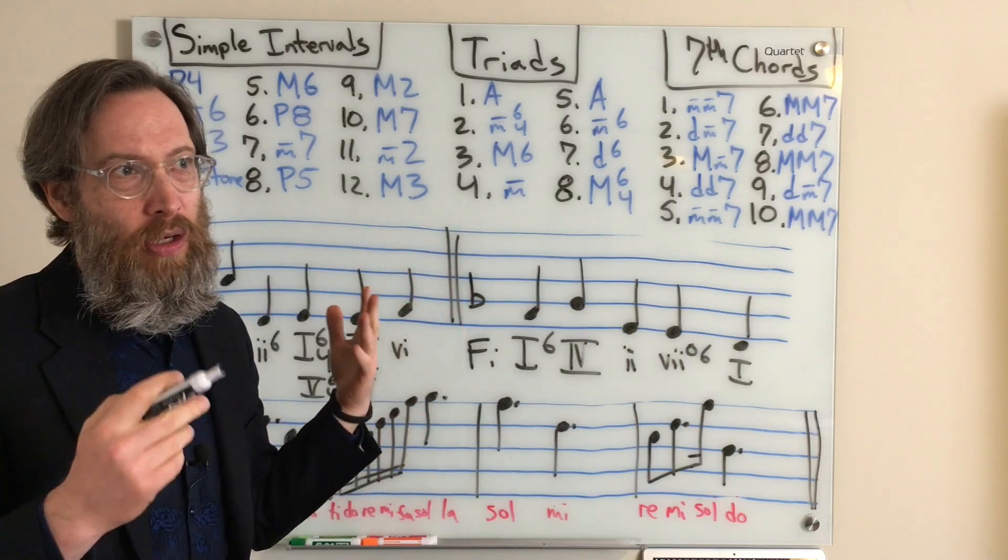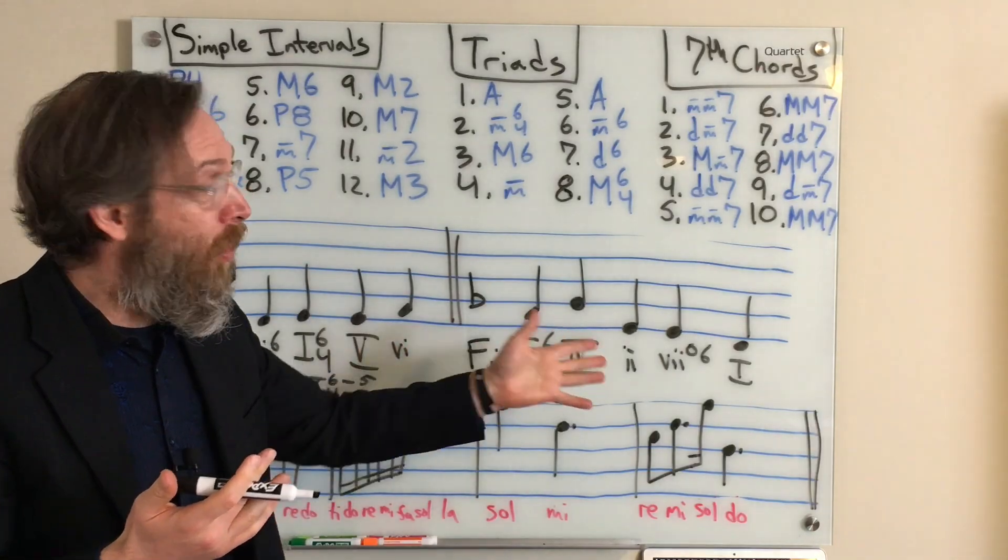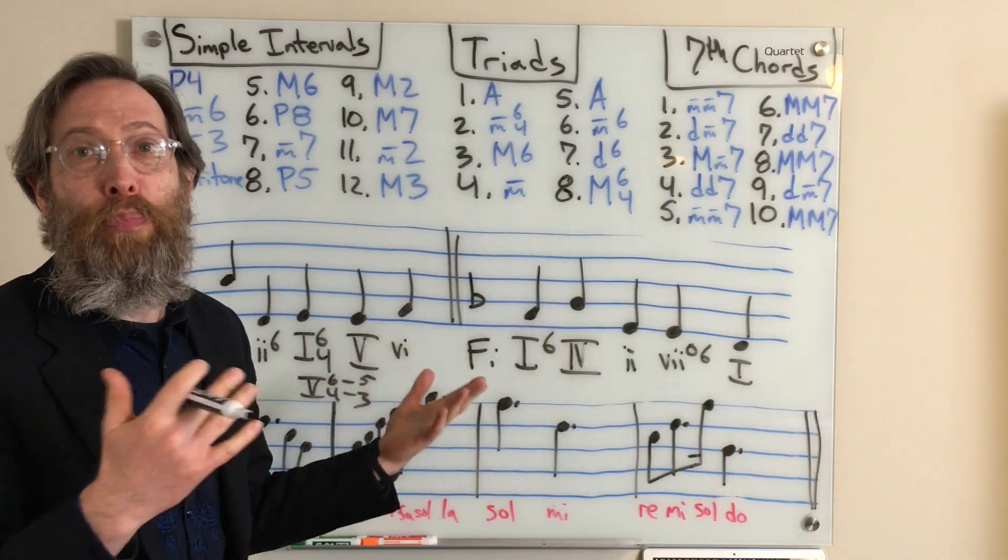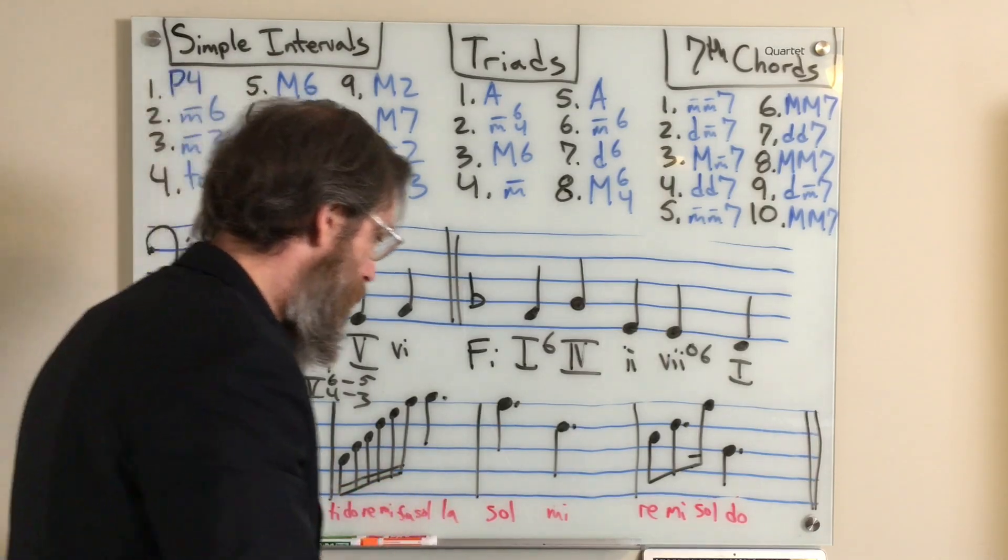So using your ability to differentiate between major and minor triads or sometimes diminished triads will help you process of elimination, figure out what the right Roman numeral should be. So let me play this one for you.